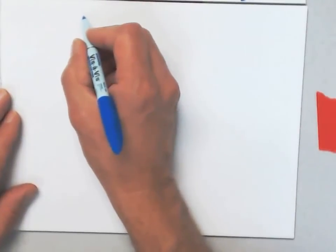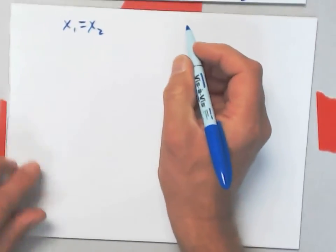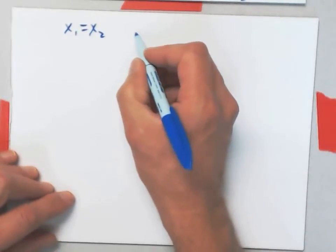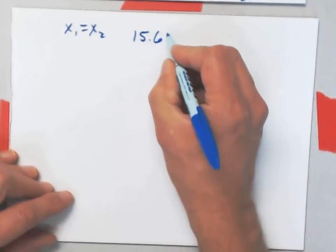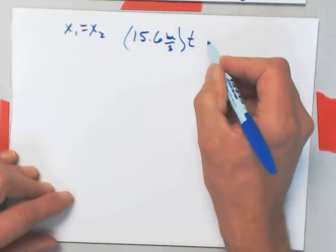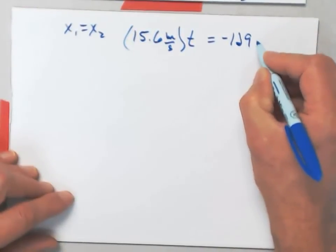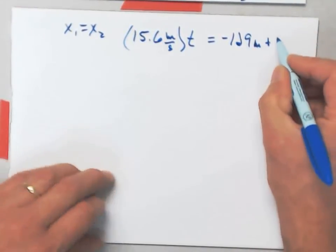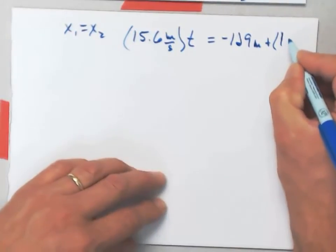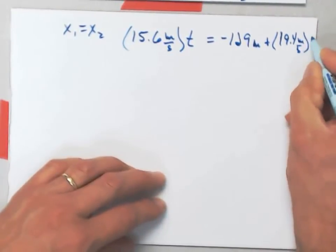So, I just say x1 equals x2. What that really implies is 15.6 meters per second times t equals minus 129 meters plus 19.4 meters per second times t.